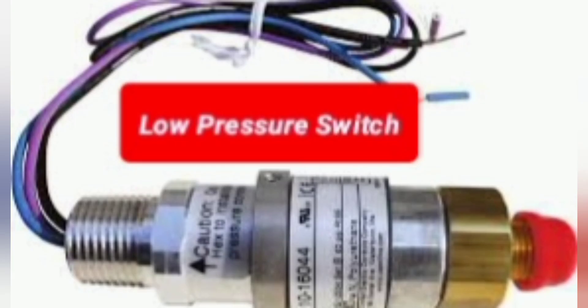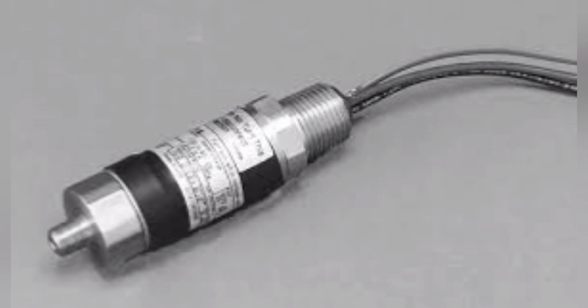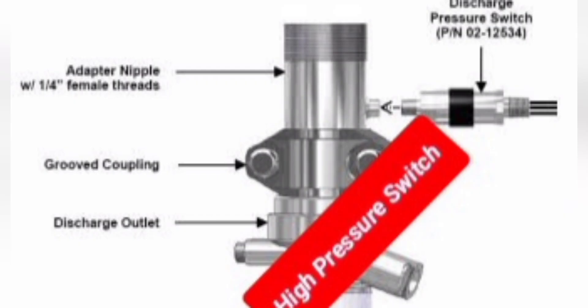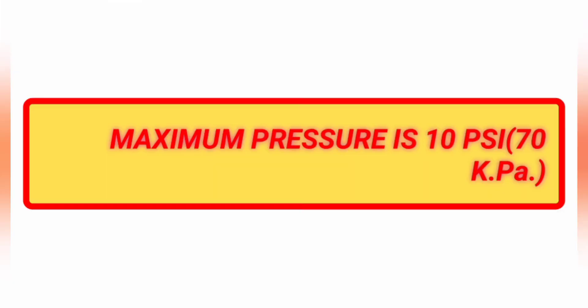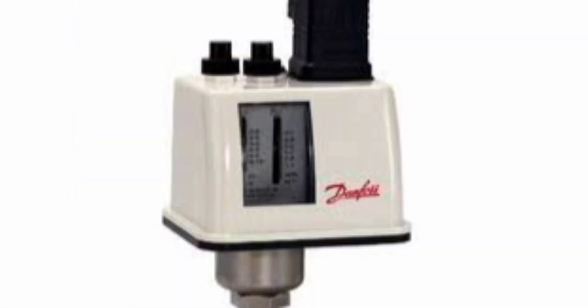The next one is high or low air pressure switch. The method is to operate the switch and verify receipt of signal is obtained where the recorded pressure is increased or decreased a maximum 10 psi (70 kilo Pascal) from the recorded pressure level.